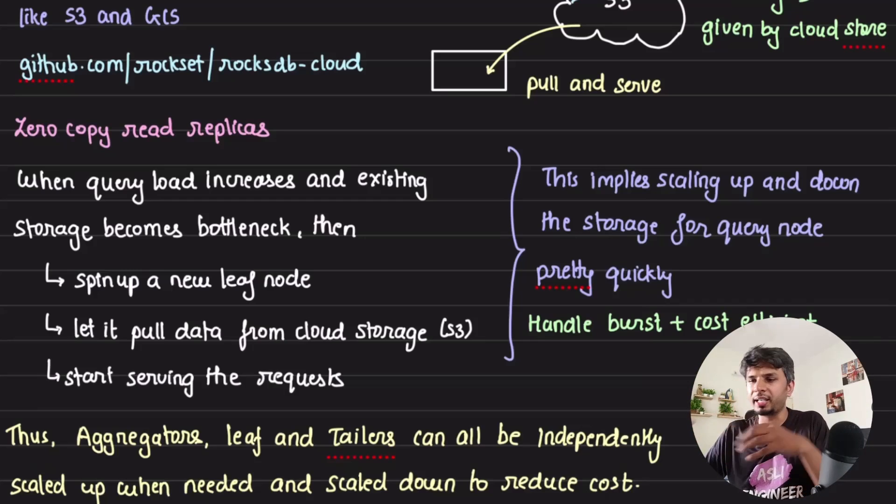Now your storage layer can scale horizontally. If as many requests come in, I can spin up as many leaf nodes with as many SST files as I want, and my query execution can be taken care of with ease. This is where zero-copy read replicas kick in. Really fascinating design decision.